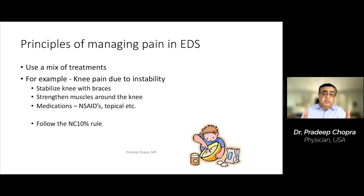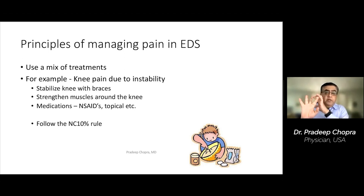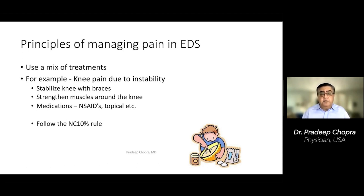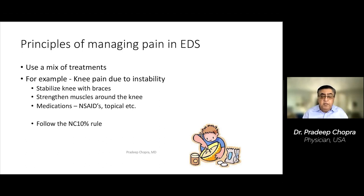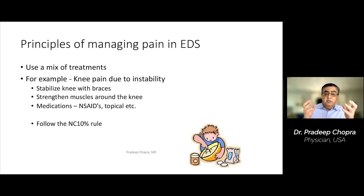Because of these complex conditions, there's no one single method or treatment. You have to use a mix of treatments. If you use physical therapy for 10%, medicines 10%, braces 10%, maybe surgery 10% — if you use five things each giving you 10% relief, you get 50% relief. That's the whole idea. I call this the 10% rule. Your expectation from any treatment should be 10%. Don't stop a medicine because you're not getting 50% or 100% relief.